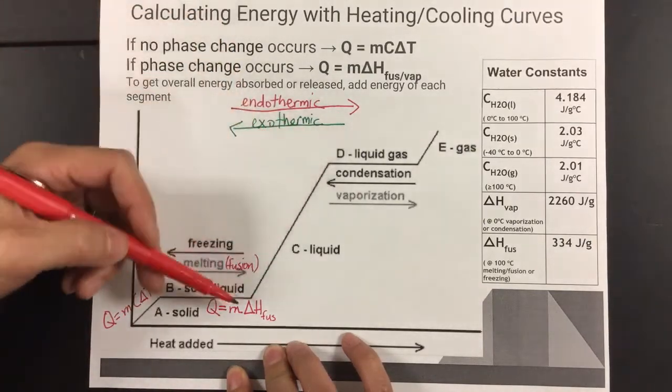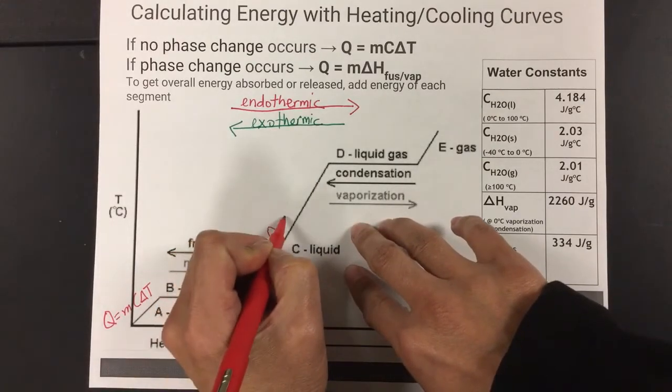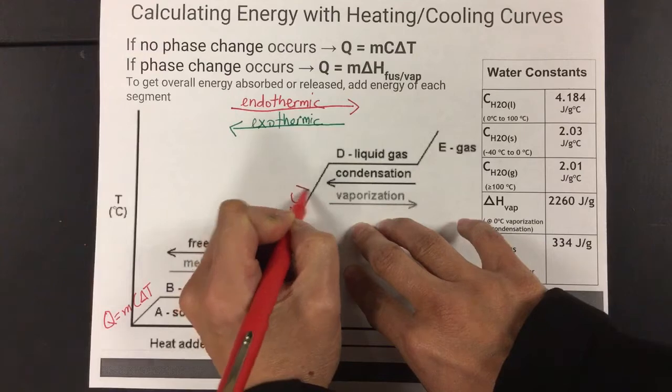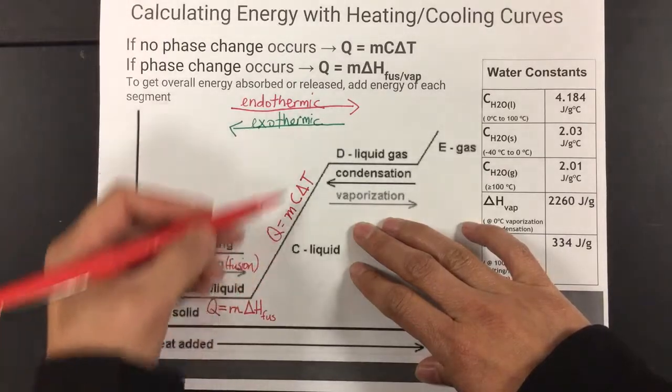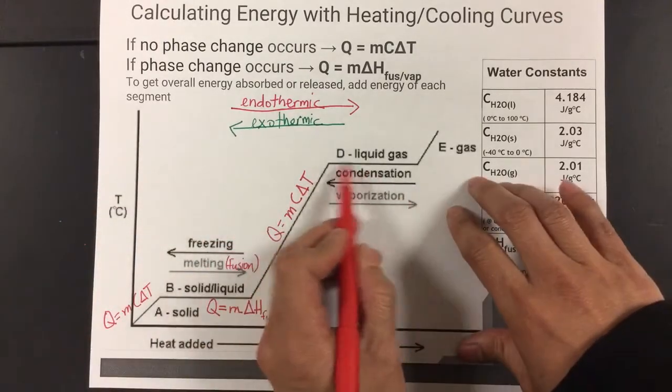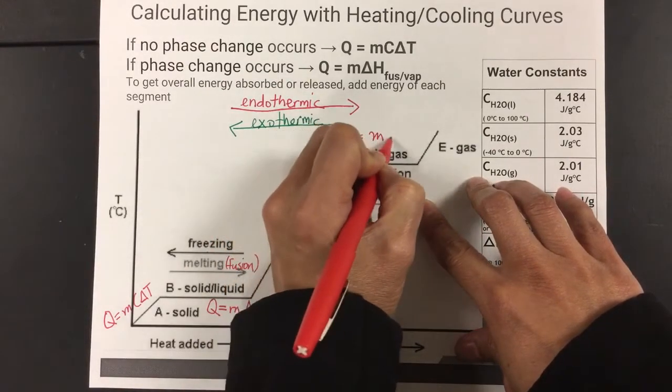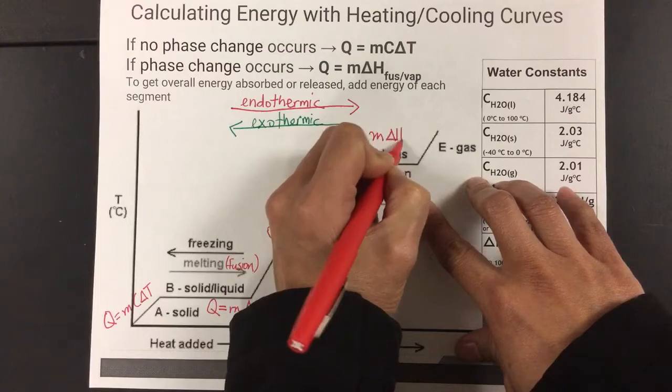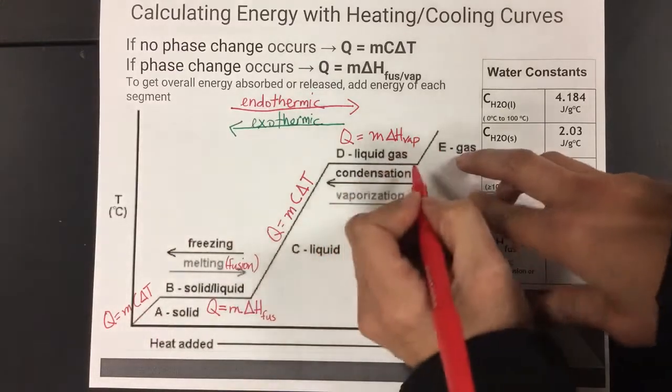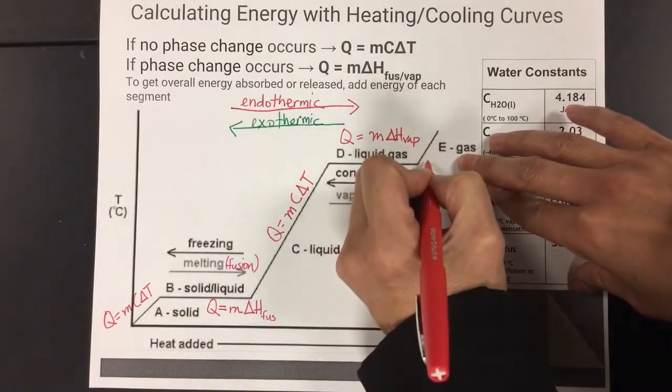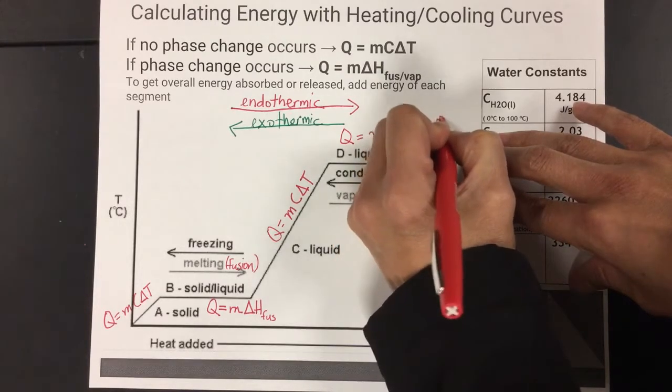Then you go through this segment right here. And through that segment, you're looking at Q equals m c ΔT because there's a change in temperature during this segment. As heat is being added, there's a change in temperature. Now you see temperature flatlining here, which means you're using Q equals m times ΔH vaporization rather than fusion. And once again, going down this line, you're using Q equals m c ΔT again.